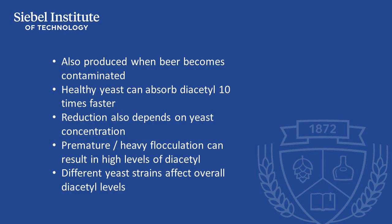Reduction of diacetyl also depends on yeast concentration and contact with healthy yeast during fermentation and maturation. Premature or heavy flocculation can result in high levels of diacetyl. It's also imperative that the end of fermentation pH is below 4.5 for these reactions to occur. Brewers can limit the amount of diacetyl precursor produced during fermentation by fermenting at low temperatures. Differences in yeast strains affect overall diacetyl levels, so brewers need to select strains that offer the performance they need to arrive at their target diacetyl levels.